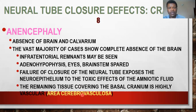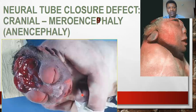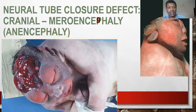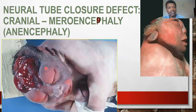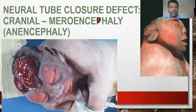This is an example of anencephaly. You can see that the cerebral hemispheres fail to develop, but we can still find the eyes and the brain stem, and the anterior pituitary gland, but not the cerebral hemispheres. This is a typical example of anencephaly.